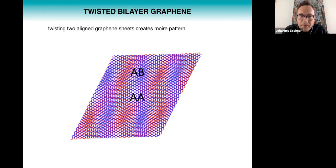When you look at this picture here you see that there are regions where the hexagons of the two layers are perfectly aligned and these are called the AA regions. But there are other regions where a carbon atom of the bottom layer is in the center of the hexagon of the top layer or vice versa and these are called the AB regions.